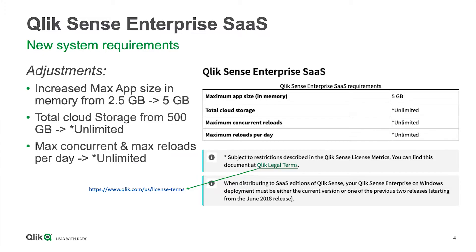This does not include the user sessions — that's important to understand. So that's the initial load of an app in memory. The other three lines here on the right hand side are important to cover. The total cloud storage that has been 500 gigabyte will now be unlimited.